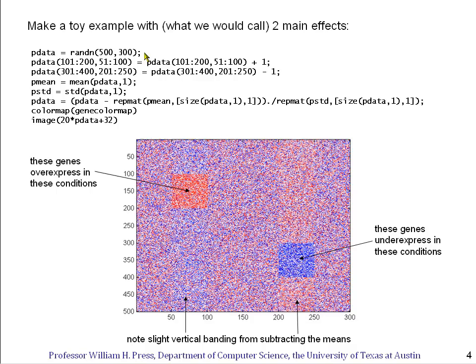But now I'm going to create two main effects. I'm going to take gene numbers between 100 and 200, and I'm going to slightly over-express the experiments, the array cells from 50 to 100 for those, and that shows up as a brighter red color here. And then I'm going to create a second, in my mind, unrelated main effect that takes genes number 300 to 400 and under-expresses experiment numbers 200 to 250 for those.